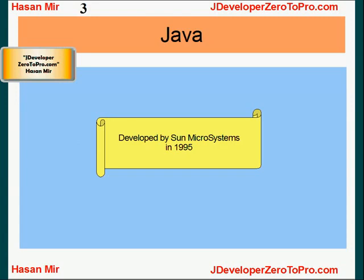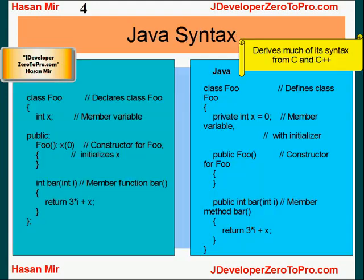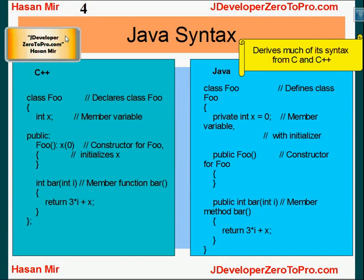Java is a programming language developed by Sun Microsystems in 1995. The syntax of Java is very much similar to C++. On the left hand side you can see a C++ program, and on the right hand side you can see a Java program — the syntax is very much similar. However, Java has a much simpler object model and fewer low-level facilities. C++ can talk directly to hardware, but Java is much simpler to write.